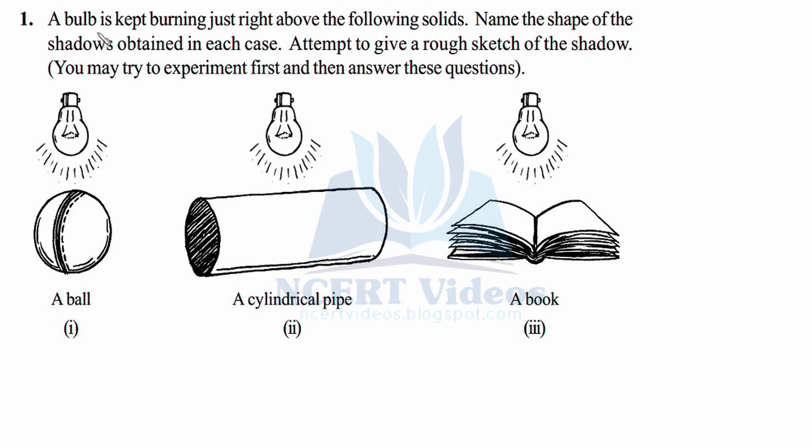Question first: a bulb is kept burning just right above the following solids. Name the shape of the shadows obtained in each case. Attempt to give a rough sketch of the shadow. You may try to experiment first and then answer these questions. So we have a ball, a cylindrical pipe, and a book.